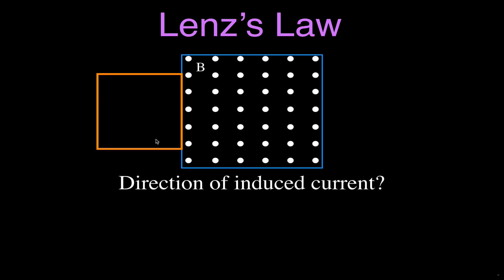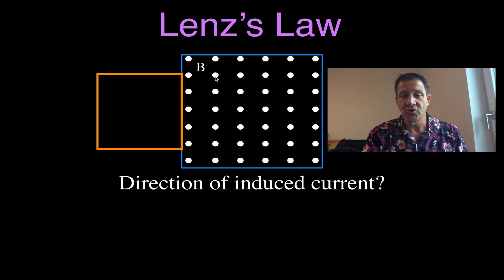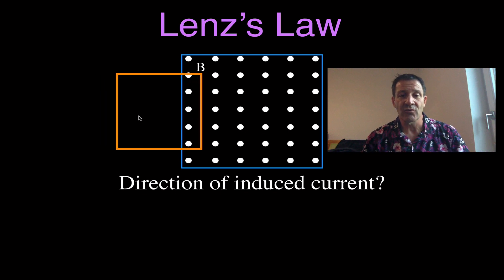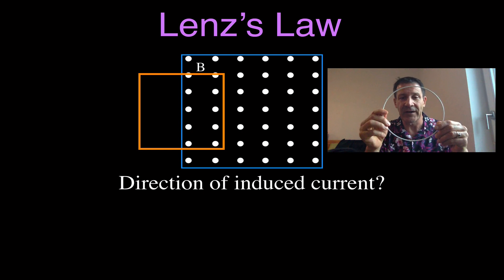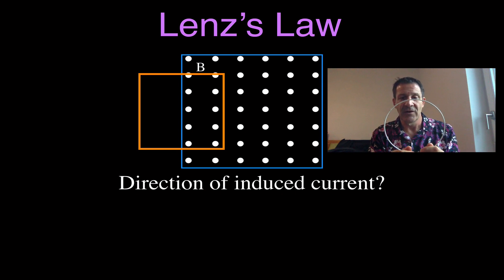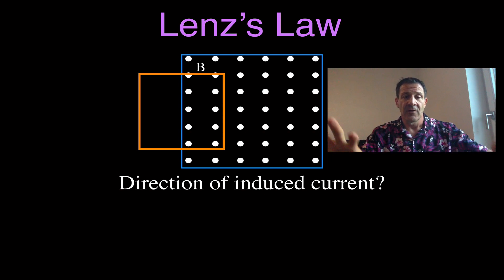Here we have a coil of wire, and here we have our magnetic field, the B field. It's pointing out of the screen. We're going to increase the magnetic flux through that coil of wire — there's no magnetic field there initially, so no magnetic flux. Sometimes it's good to have something like an actual coil of wire to kind of play along and use as an example, or just have a picture in your mind of what's going on.